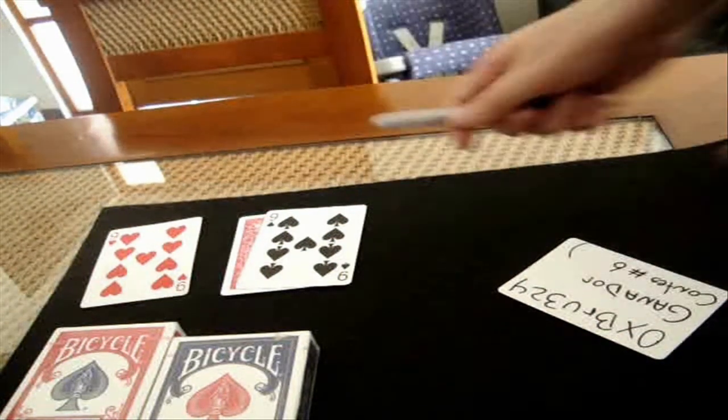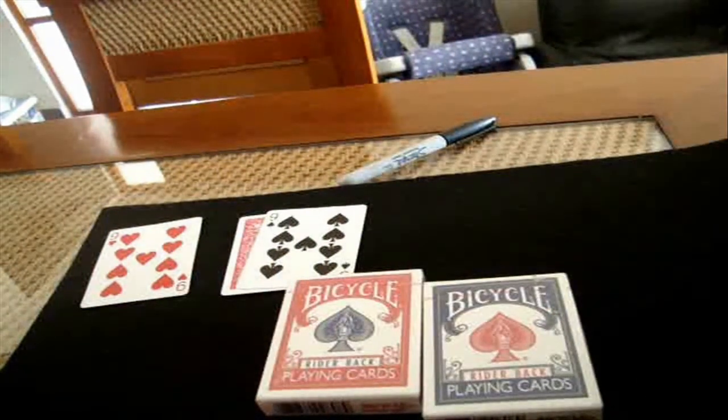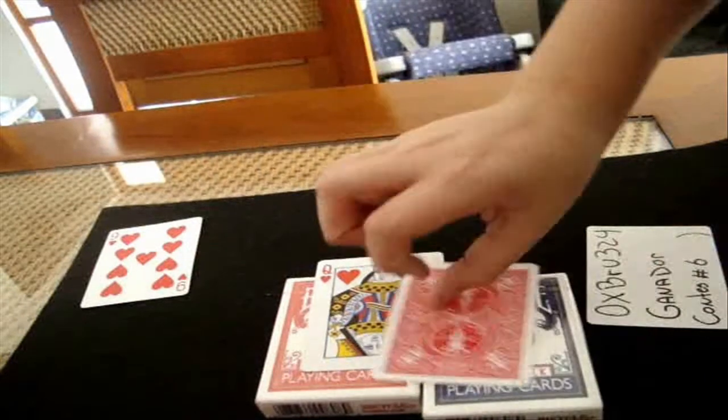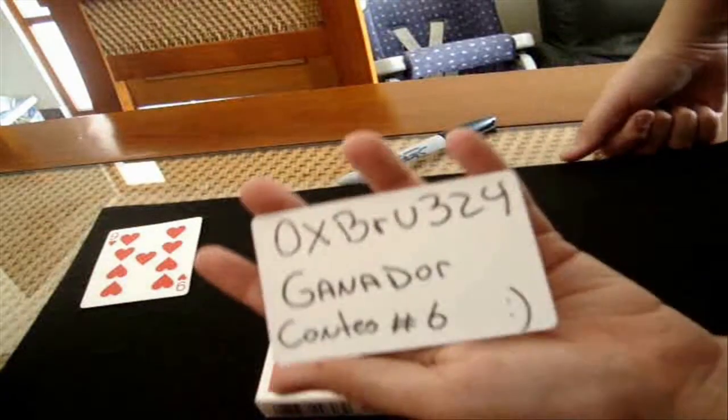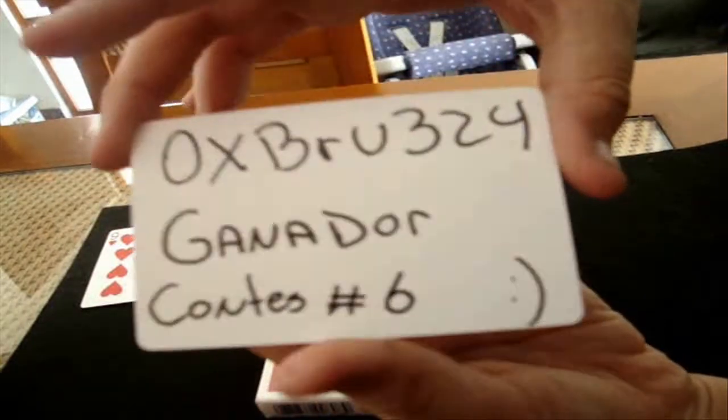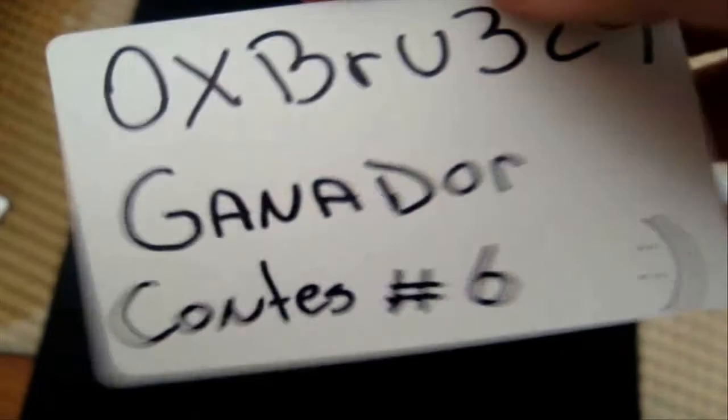Okay so here you have just choose between these a red and a blue and gimmicks and Oxbrew 3 to 4 winner ganador is the same contest number 6 and smiley face and smiley face okay there you go.